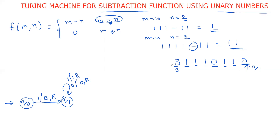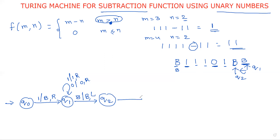We are converting the first one into blank, so we also have to convert the last one into blank. When blank occurs, blank is replaced with blank and then move in the left direction — state q2. At state q2, the last one is replaced with blank. So at state q2, whenever one occurs, one is replaced with blank and move to the left direction.